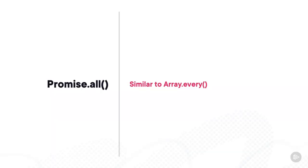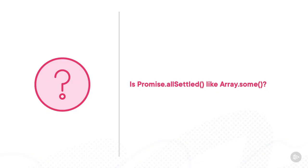When we used Promise.all earlier, it was similar to using array.every — we only wanted our then code executed if each promise was successful. You might be tempted to think that Promise.allSettled is like some, except that allSettled calls the then function even if some of the promises failed. That's why in the last clip we had to check the status value of each promise result. So if it's not allSettled, what function is similar to some?